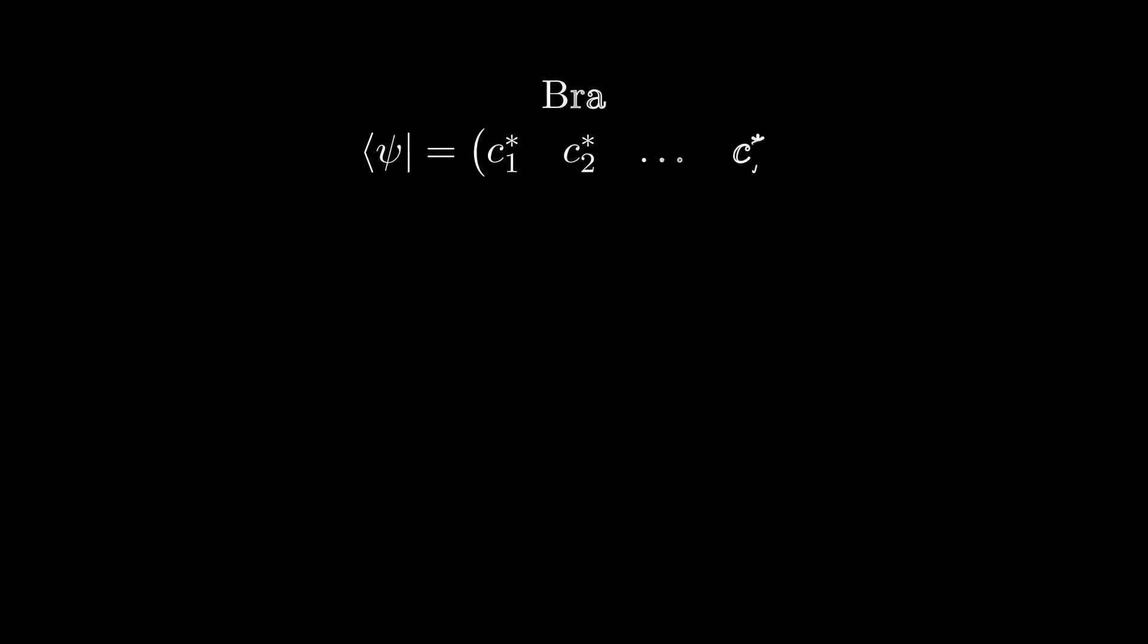A Bra is denoted as follows, and is an element of the dual of a given Hilbert space, which corresponds to a map from kets to scalars, in this case, complex numbers. For finite-dimensional spaces, this really just amounts to being the conjugate transpose of the equivalent ket column vector, giving us a row vector.